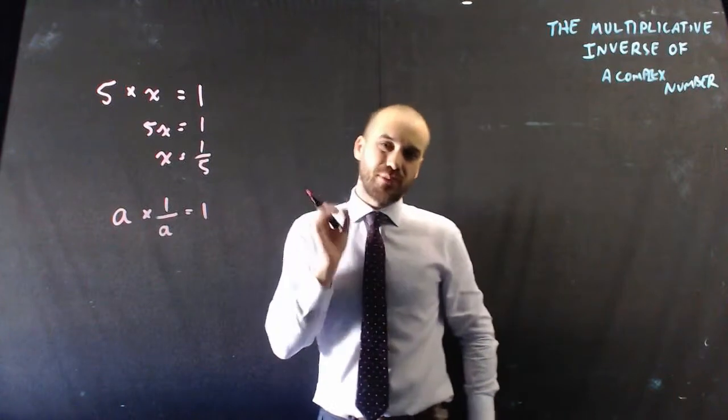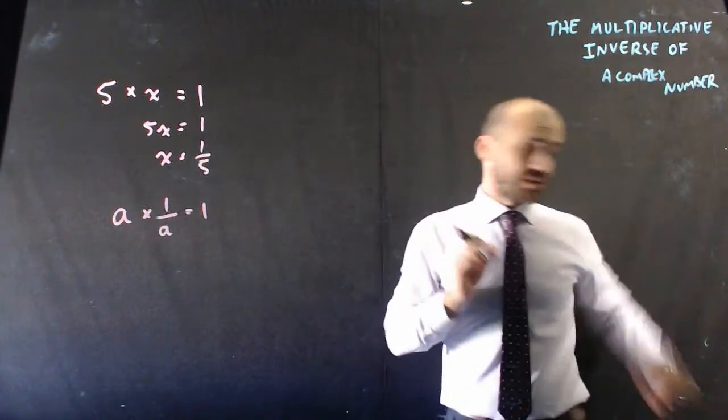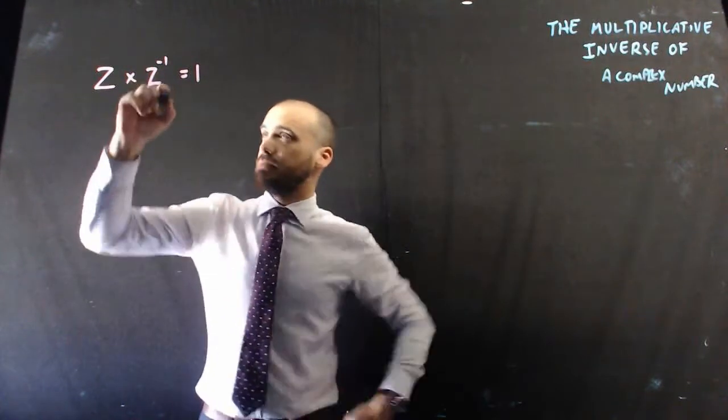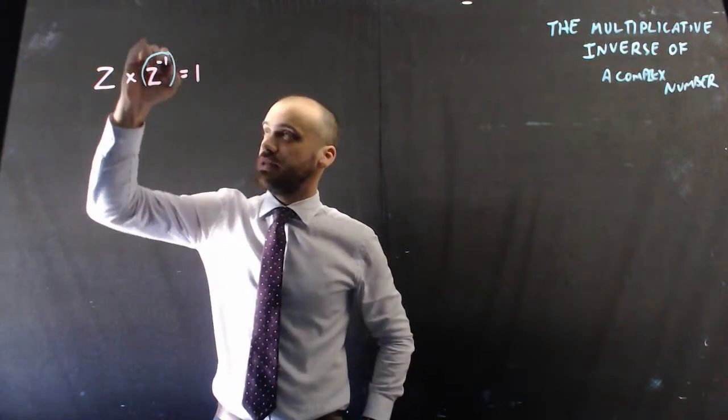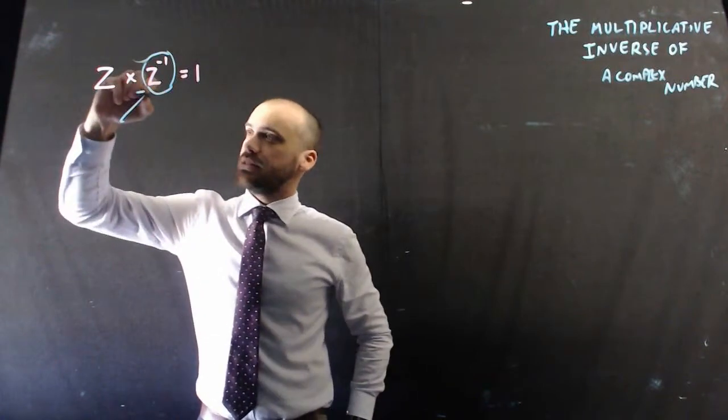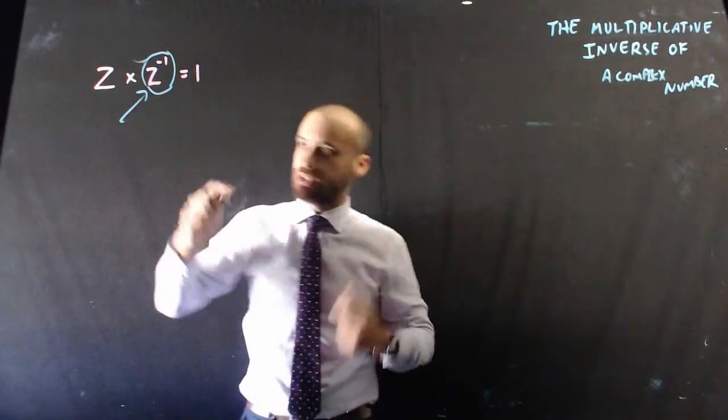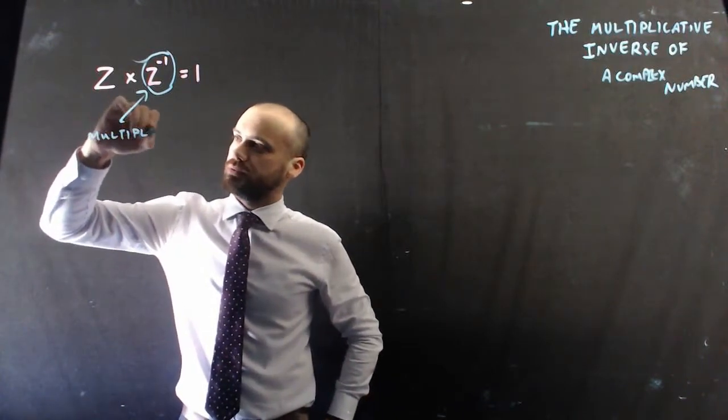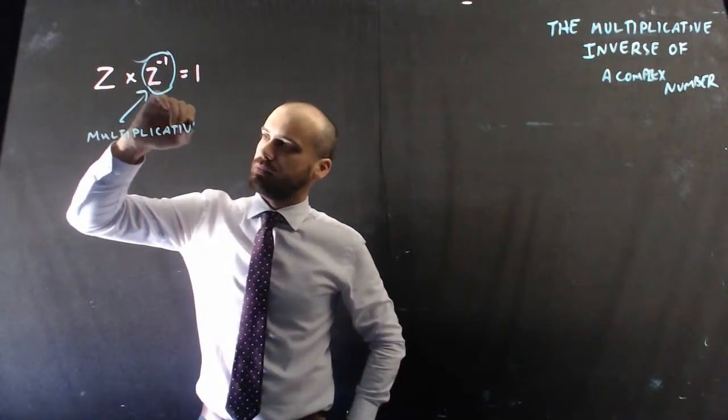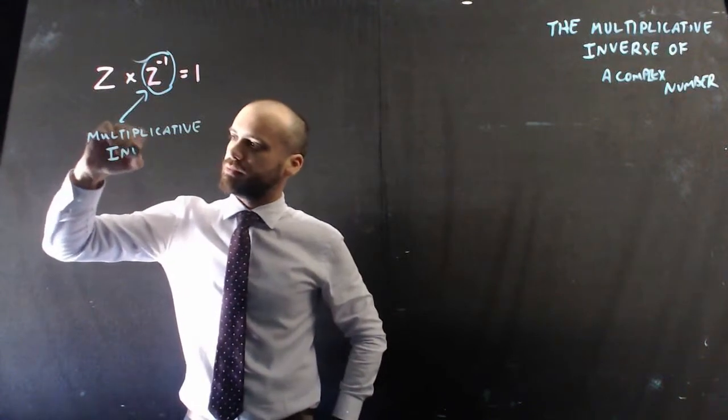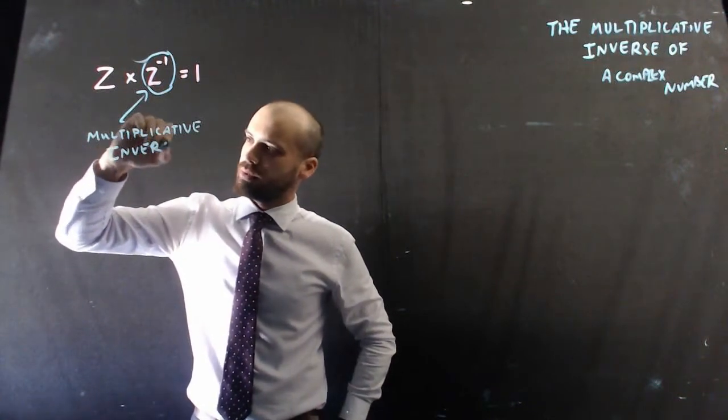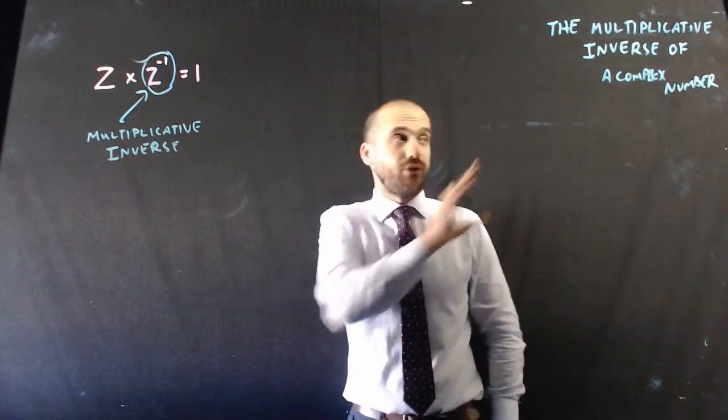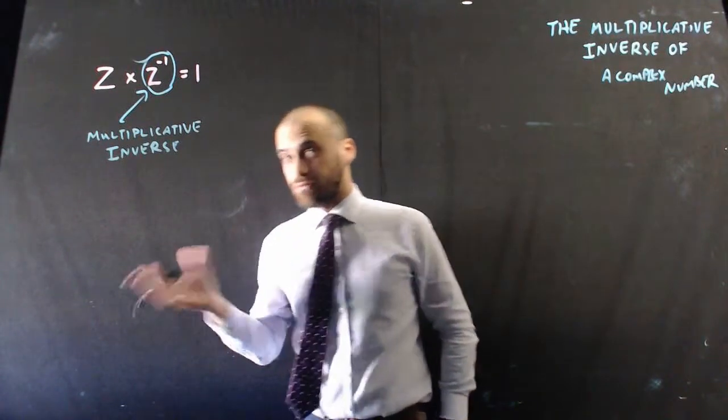Now we need to find the multiplicative inverse of a complex number. So here we have two complex numbers. It's important to note that here, z to the negative 1, that's the symbol, the notation that we use for a multiplicative inverse. And a multiplicative inverse actually works exactly the same as a regular number.